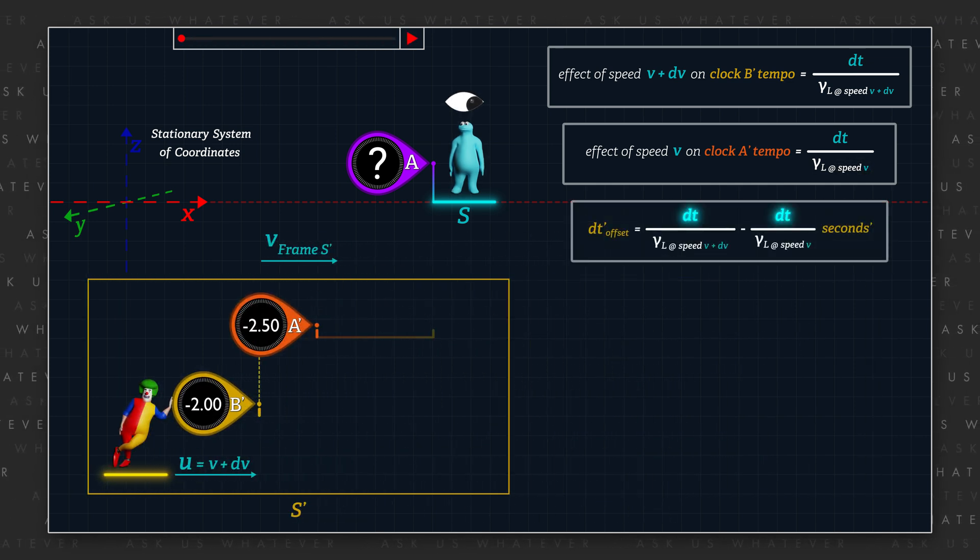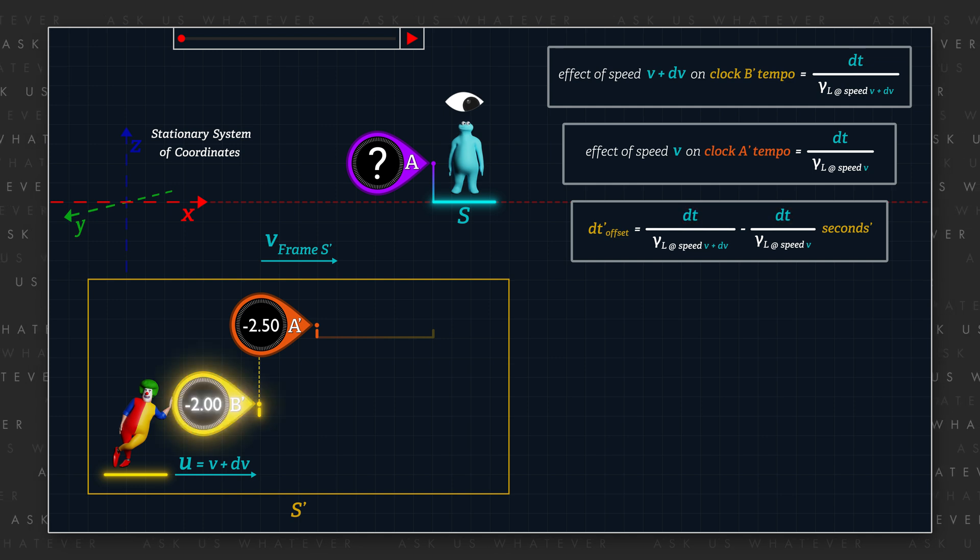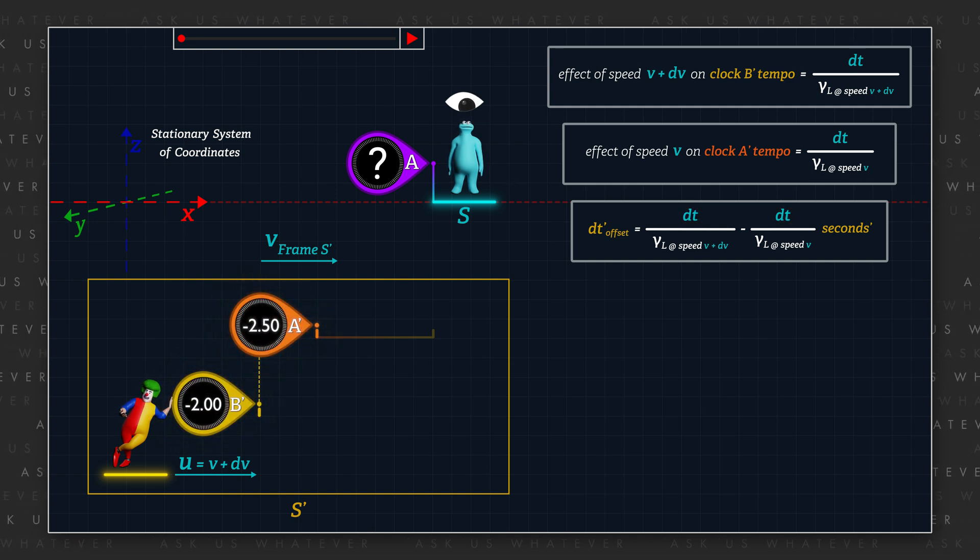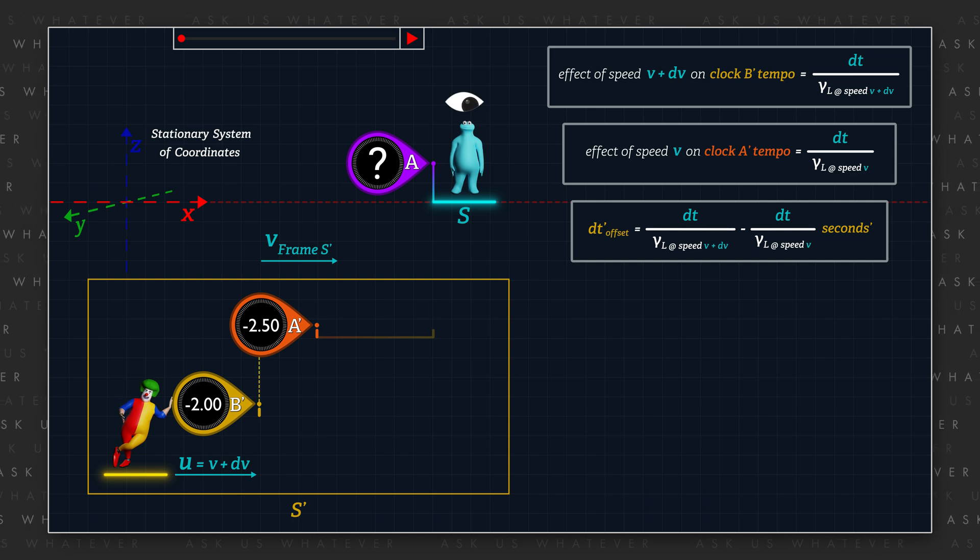After a given period of time DT, the readings reported by clocks B' and A' will differ due to the slight difference in their clock rates. We call this difference the offset between the clocks.